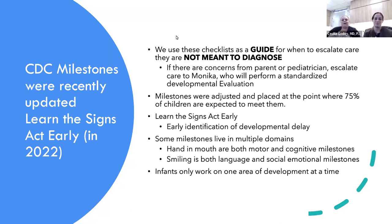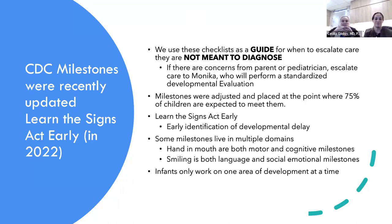Some milestones live in multiple domains. A baby smiling is a language milestone — it's a gesture, expressing themselves — but it's also a social-emotional milestone. Putting hands in the mouth is a huge motor milestone but also a cognitive one, because kids can only explore with their mouths before their hands are dexterous enough to manipulate objects. When we talk about delays, we want to look at the big picture.